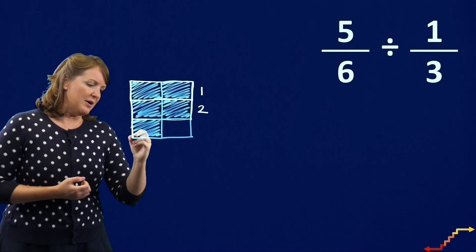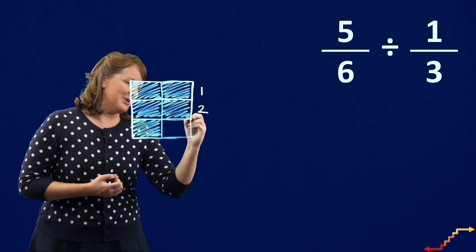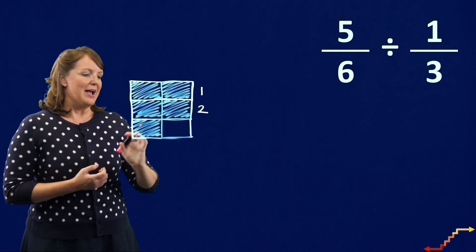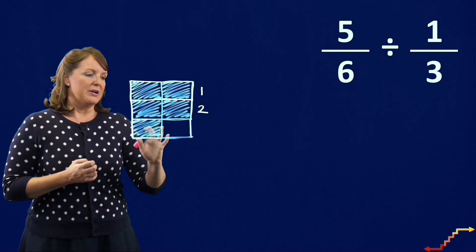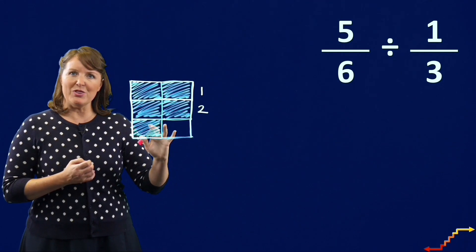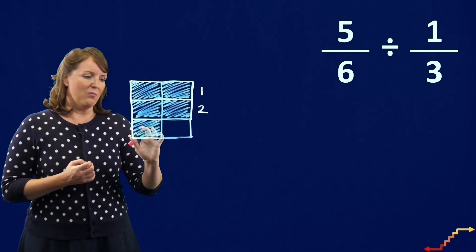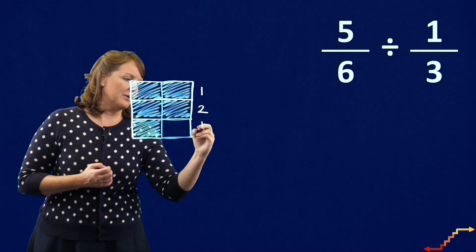But then here, if I ring this one-third group that represents one-third, I do not have a full group there. So how much of the next group of one-third do I have? We have one-half of it.